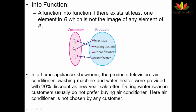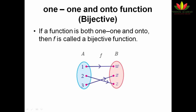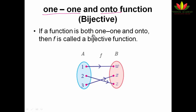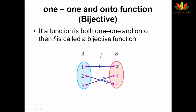After onto function, we have bijective function. If a function is both one-to-one and onto, then I call it a bijective function. In an onto function there are no remaining elements, and in a one-to-one function each element gets only one mapping, so combining both gives a bijective function. The prefix 'bi' means two — we are connecting two function properties together. The function which satisfies both the one-to-one test and the onto test is known as a bijective function.